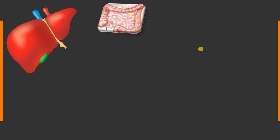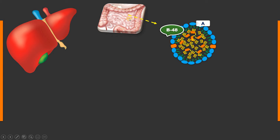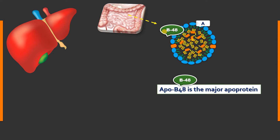Chylomicron is synthesized from the intestinal mucosal cell. After dietary lipids are digested and absorbed into the intestinal mucosal cell, chylomicron is produced and released into the lymphatics, and through the thoracic duct it reaches circulation. The major apolipoprotein present in the chylomicron is B48, because the site of synthesis of B48 is the intestinal mucosal cell.